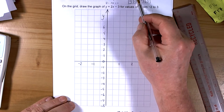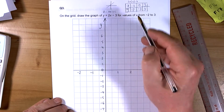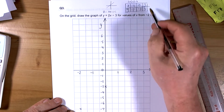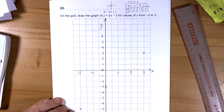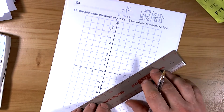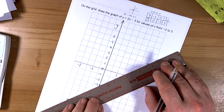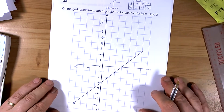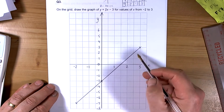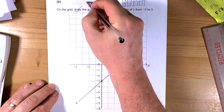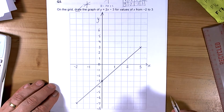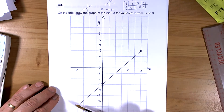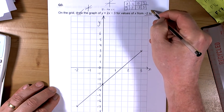Now we plot our coordinates: negative 2, negative 7; then 0, negative 3; and 3, 3. If we calculated those correctly, they should form a perfect straight line — and they do. We draw a line connecting all the points between negative 2 and 3, as the question wanted. Remember: when you draw a graph it must have a line, not just points. That's an easy mark lost if you're not careful.